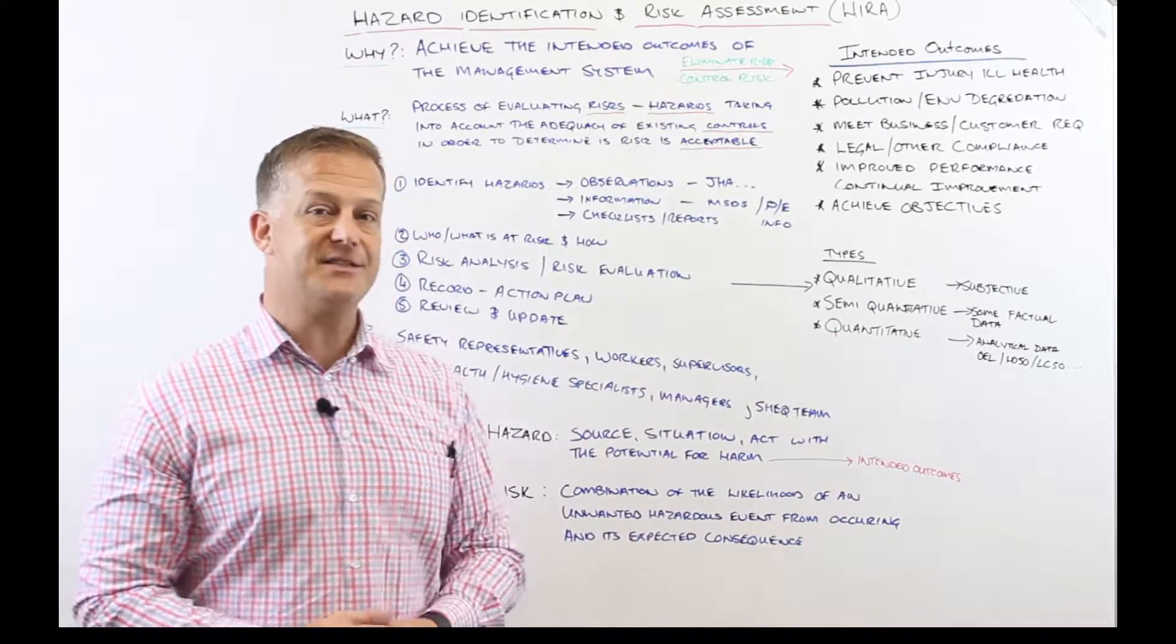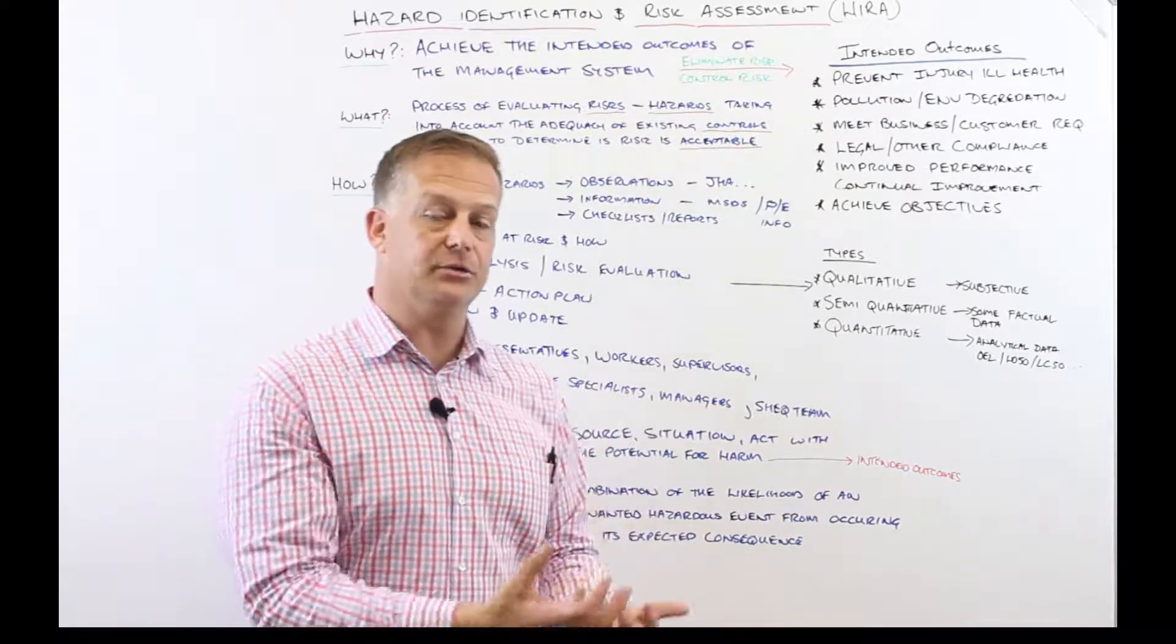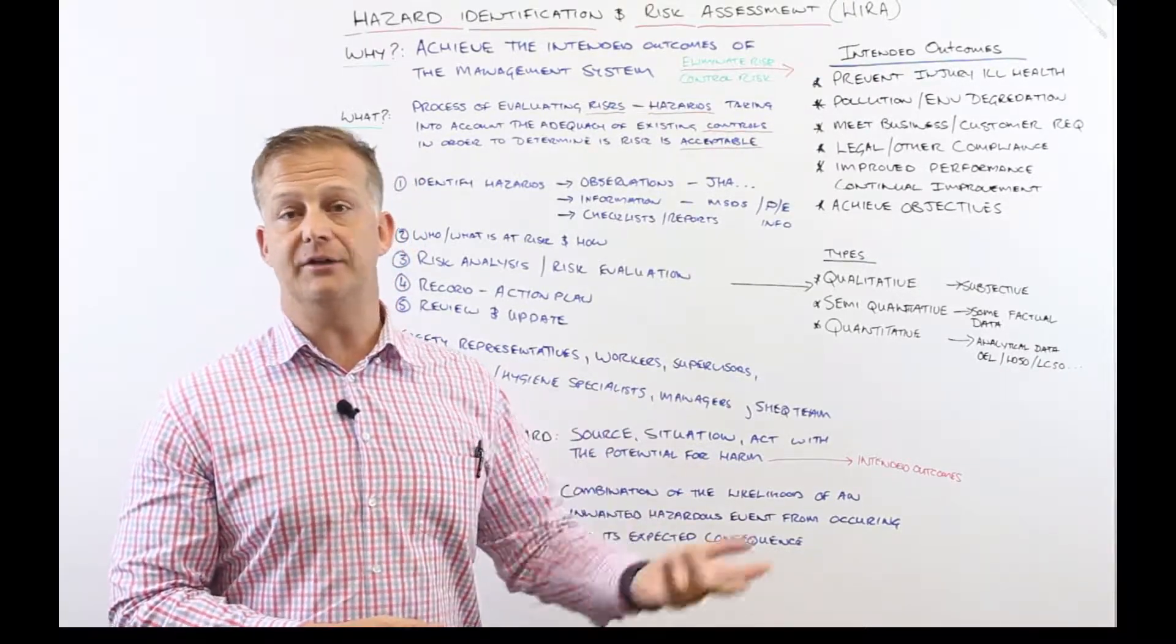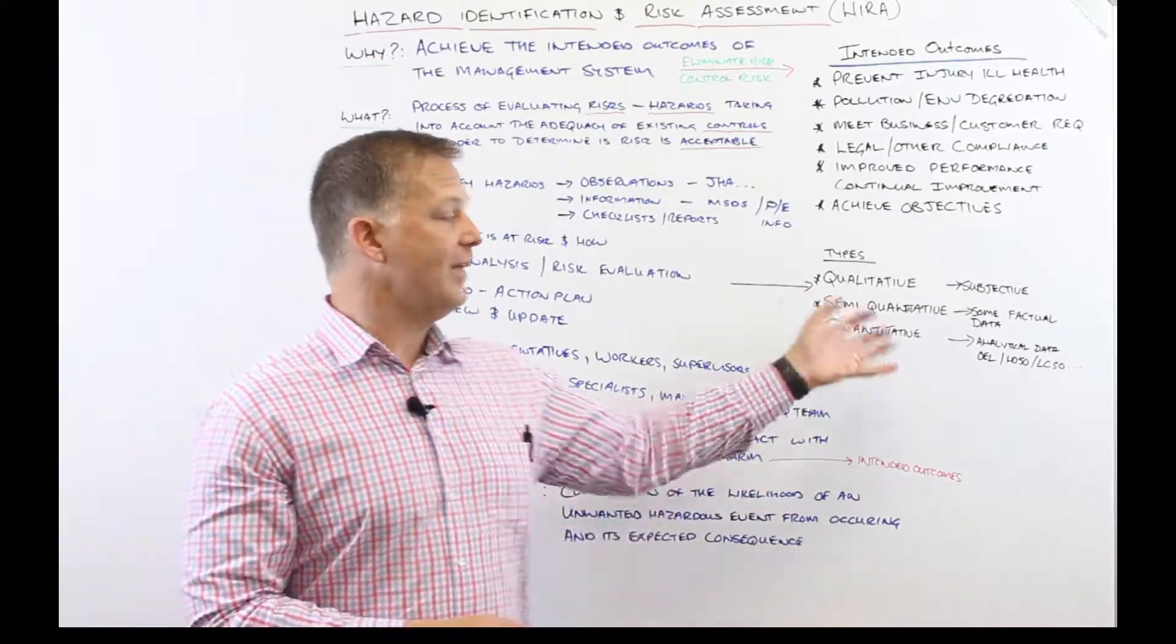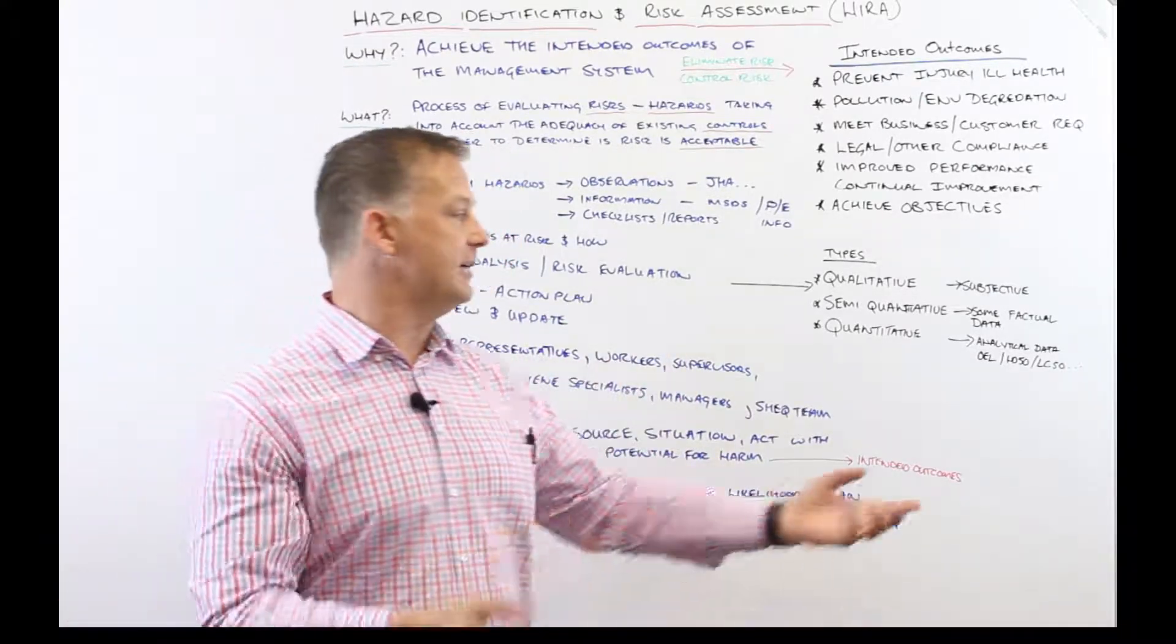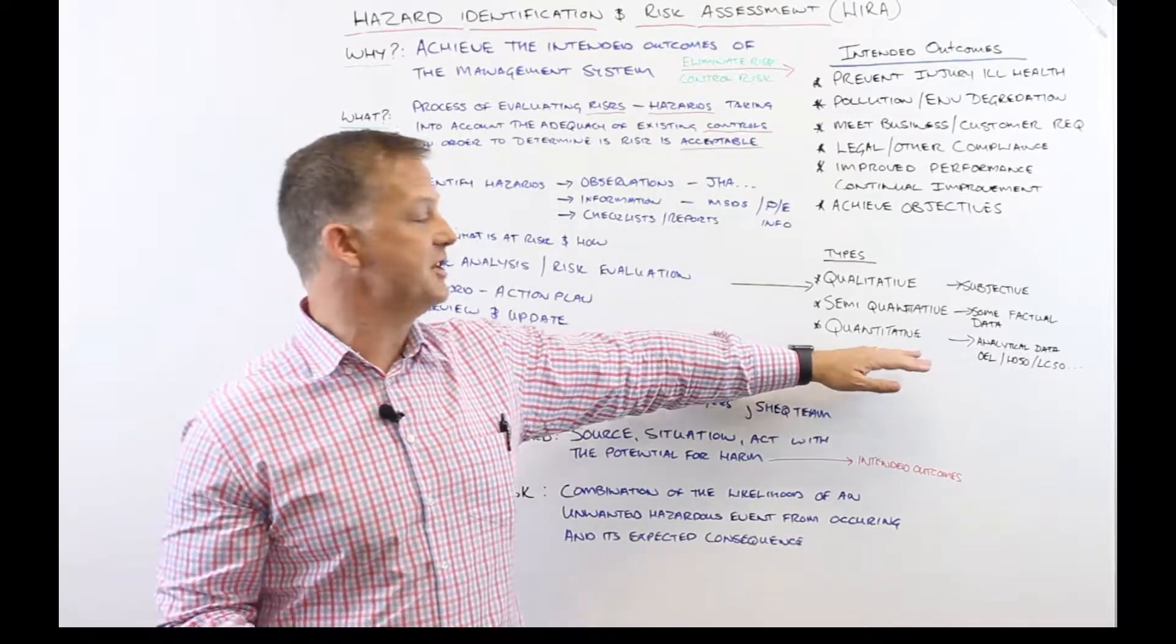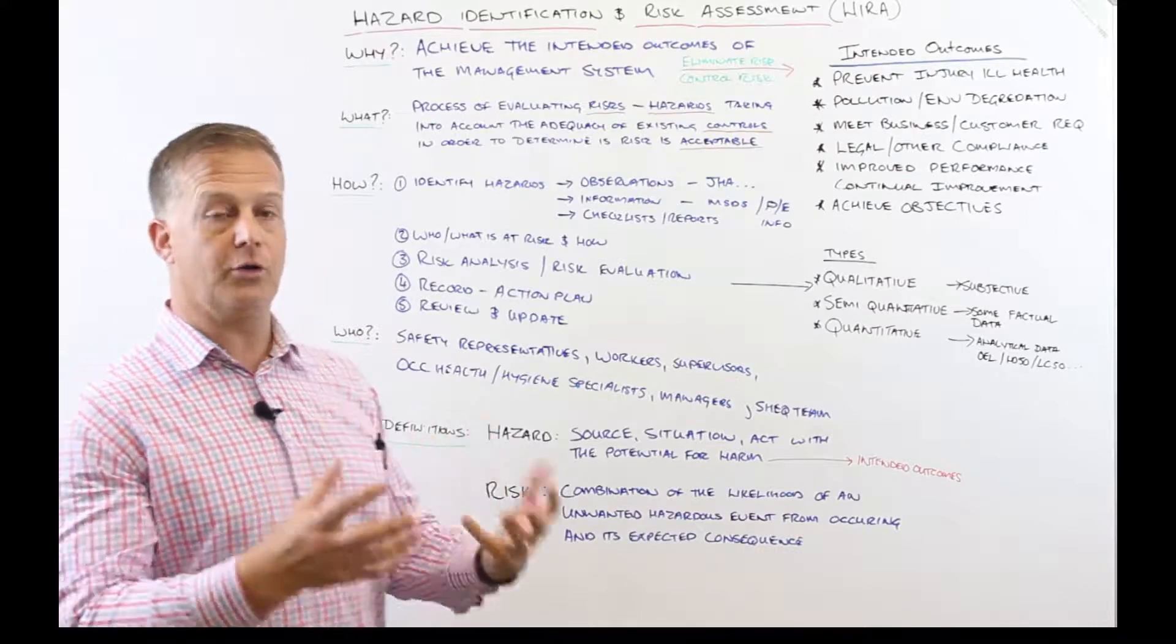Then you also have a quantitative risk assessment. As an example for that, you're using analytical data. The information supplied in a material safety data sheet such as OEL - occupational exposure limits, LC50 and LD50 - lethal concentration or lethal dose 50, LC90, LD90. All of that is hard science, factual evidence, analytical data that people can provide to be able to formulate an understanding of risk associated with a particular chemical. So in many cases, when they're doing a chemical risk assessment, that may be a quantitative risk assessment based on concrete scientific data.